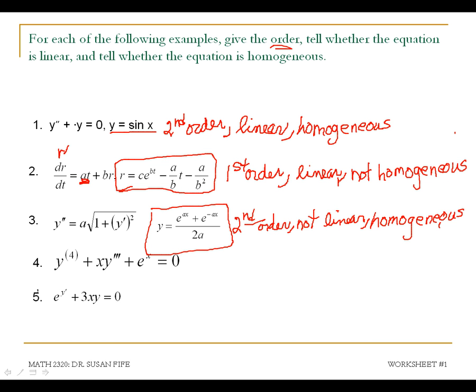Here I have a 3rd derivative term. And then I have a term that doesn't contain y at all. And then 0. My highest derivative here is 4. So this is a 4th order ODE.